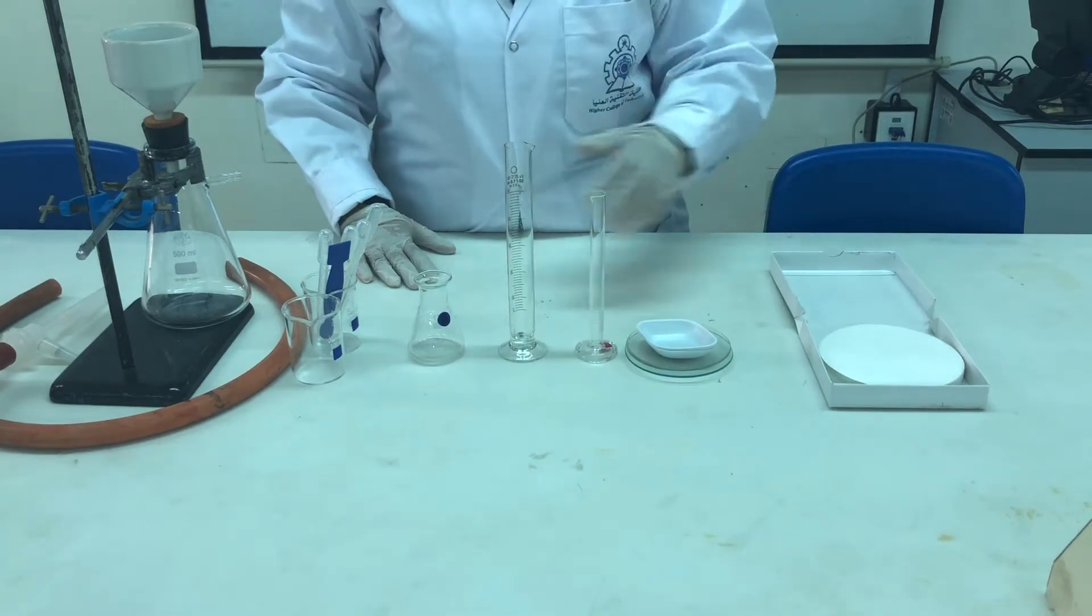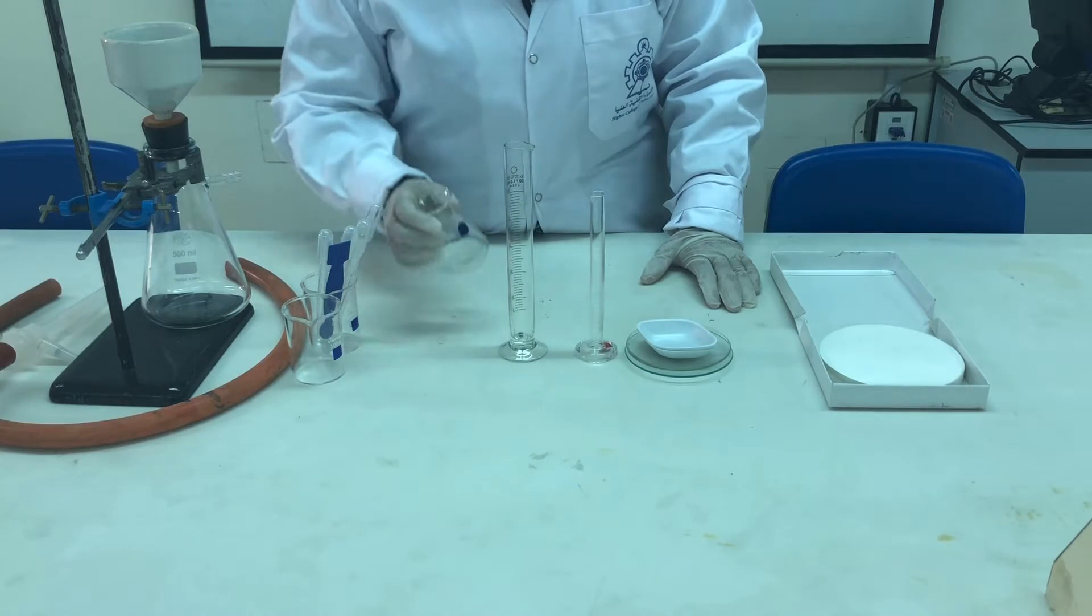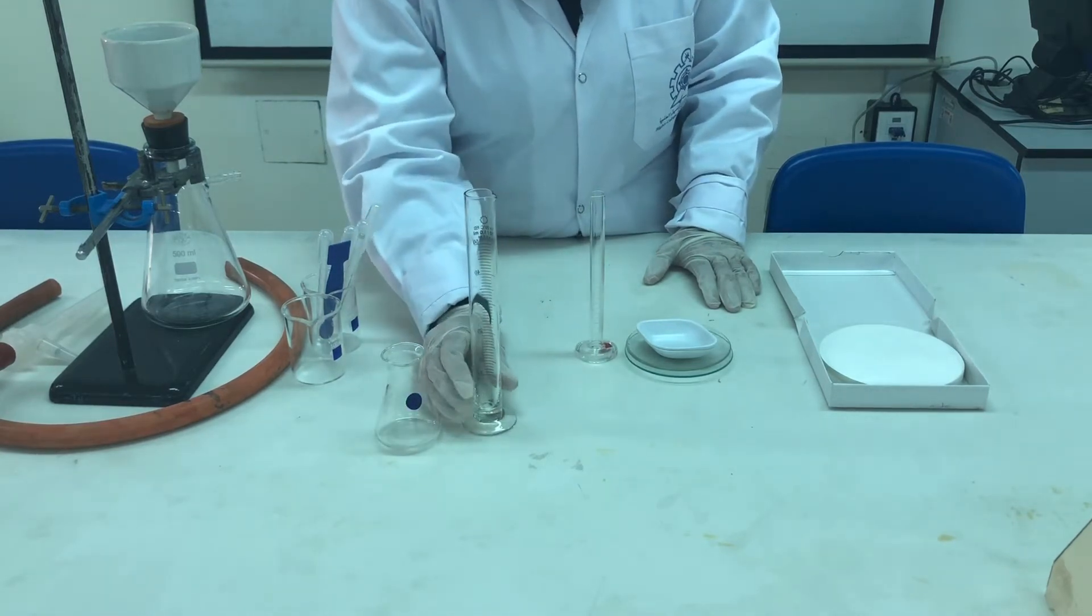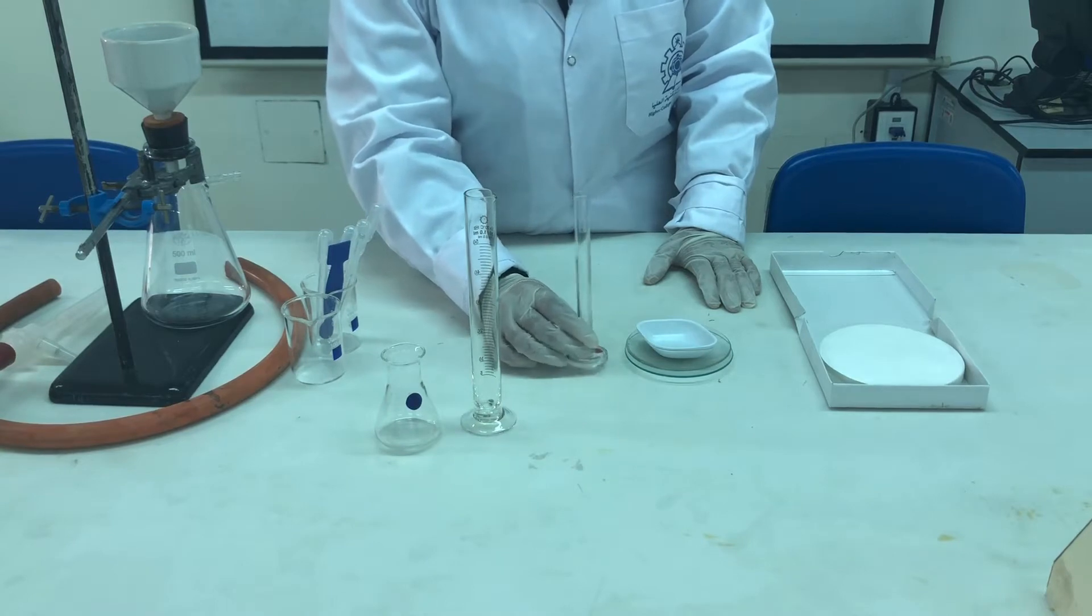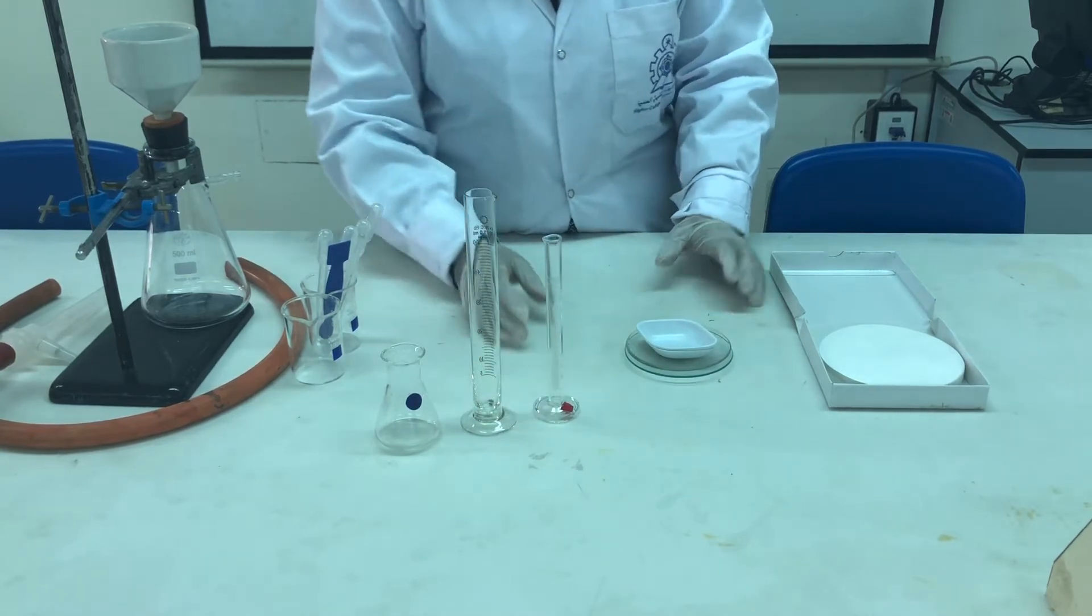As you can see here, these are the apparatus that we are going to use for this experiment. As you know, this is the conical flask. This is the measuring cylinder, which is about 50 ml, and this is also the measuring cylinder which we are going to use.